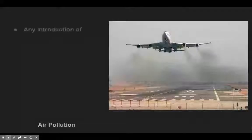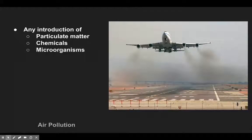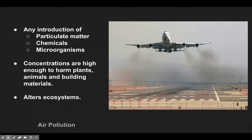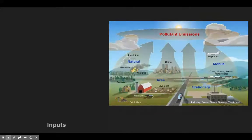What is air pollution? Air pollution is the introduction of substances in concentrations high enough to harm living things, or even buildings and materials. That's the key — it has to be in high concentrations. And lastly, it's going to alter an ecosystem. We learned about the nitrogen cycle and the carbon cycle, but the influx of these pollutants into our atmosphere is now starting to alter ecosystems as a whole.